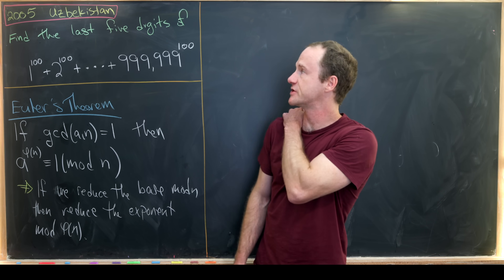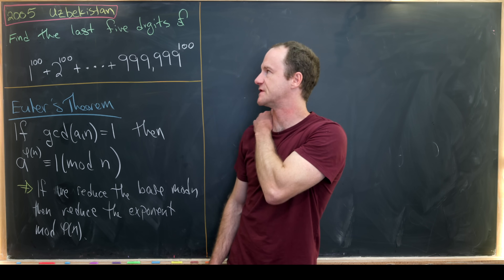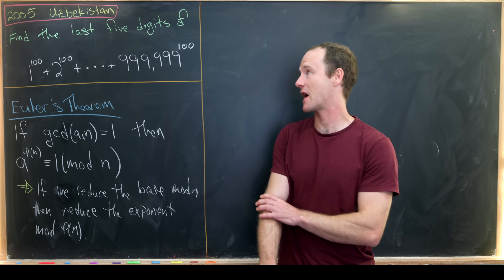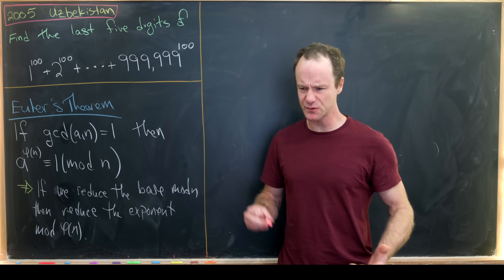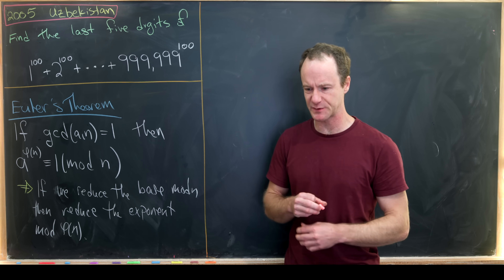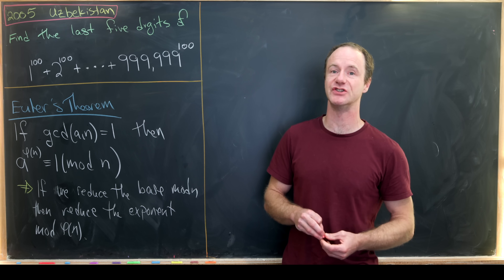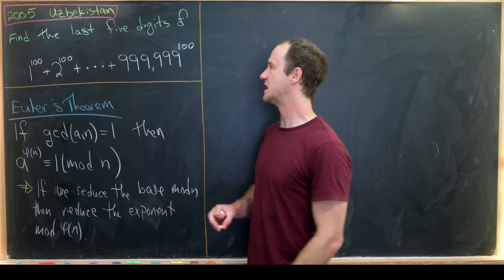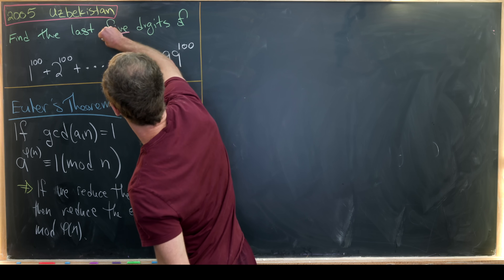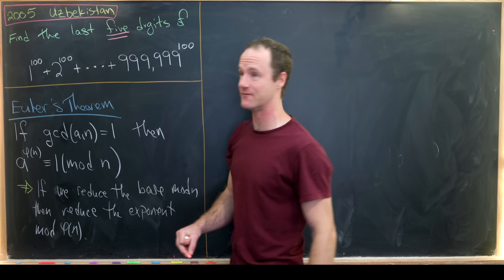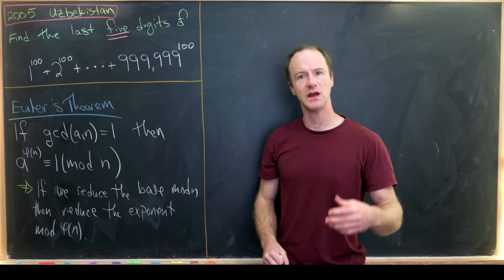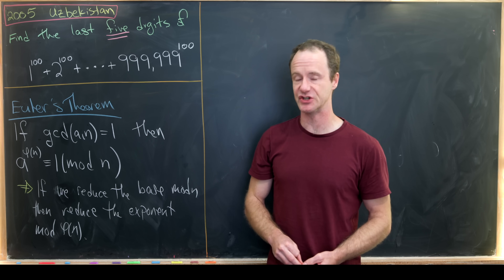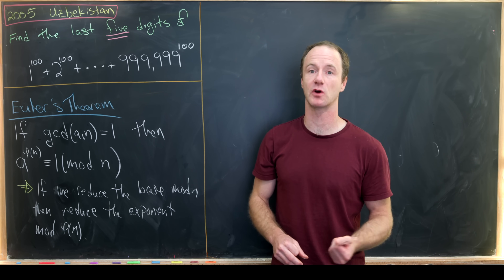Today I want to show everyone a pretty interesting problem from the 2005 Uzbekistan Math Olympiad. This is one of those problems where you find the final digits of a certain number. What's interesting here is that we're finding the last five digits instead of the last one, two, or three digits, which is much more customary.